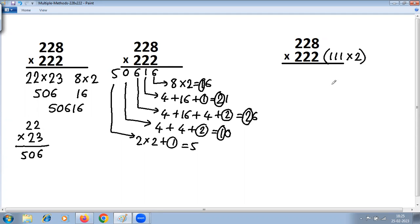So 228 multiplied by 111. Here we are using multiplication by series of 1. Last digit as it is: 8. 2 plus 8 is 10, so 0 carry 1.